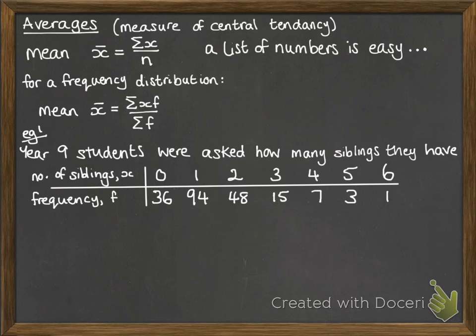Here we have some year 9 students who were asked how many siblings they have, where x is the number of siblings and f is the frequency. Looking at this, we can see there were 48 students who said they had two siblings. If we want to know how many people had four siblings, we'd just read off - there were seven people who said they had four siblings.